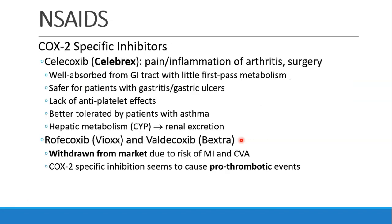Now let's talk about COX-2-specific inhibitors. Celebrex, or Celecoxib, is effective in treating pain and inflammation of arthritis and surgery. It's well absorbed from the GI tract with not very much first-pass metabolism. It's safer for patients with gastritis or gastric ulcers, has no platelet effects, is well tolerated by patients with asthma, and is metabolized in the liver and excreted in the kidneys. Similar drugs like Vioxx and Bextra were withdrawn from the market due to risk of MI and stroke — too much COX-2-specific inhibition causes pro-thrombotic rather than anti-thrombotic events, so a good balance between COX-1 and COX-2 inhibition is needed.